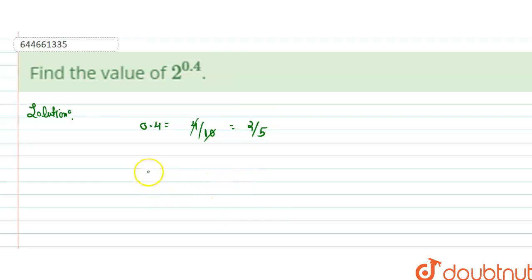So we write down 2 to the power 0.4, which is 2 to the power 4 by 10. And this can be written as 2 to the power 2 by 5.